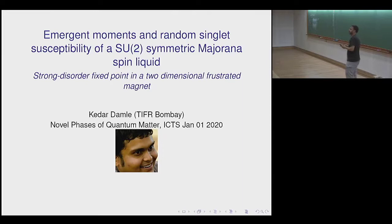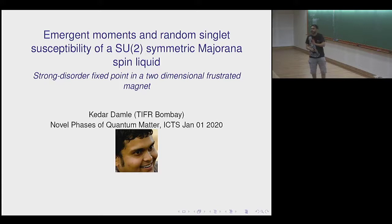The goal here is to try and convince you that there is at least one tractable situation in which we can do a numerically exact calculation that shows random singlet phenomenology of disordered frustrated SU(2)-symmetric antiferromagnets. That's the message, and for the rest of the talk I'll justify that statement.